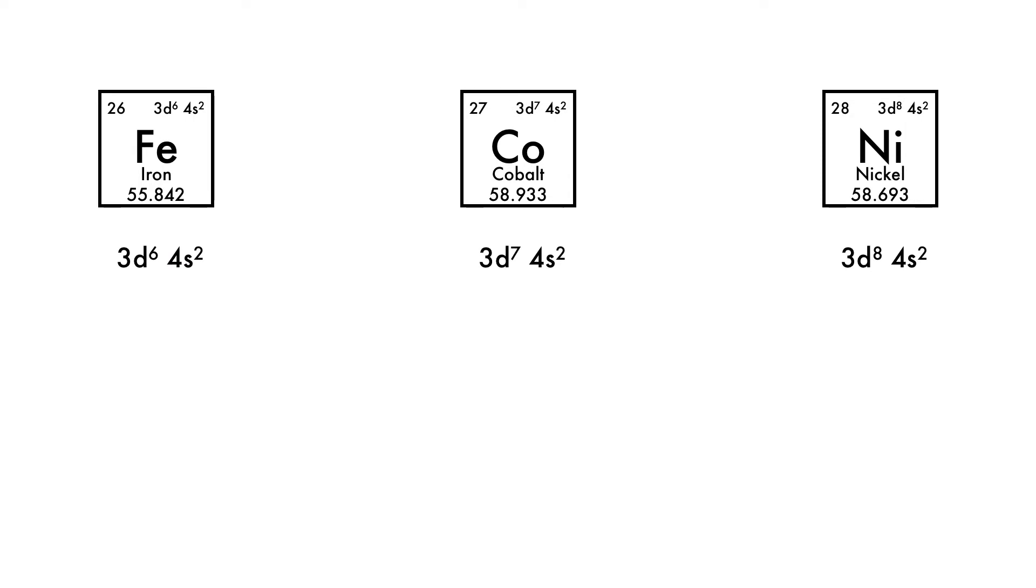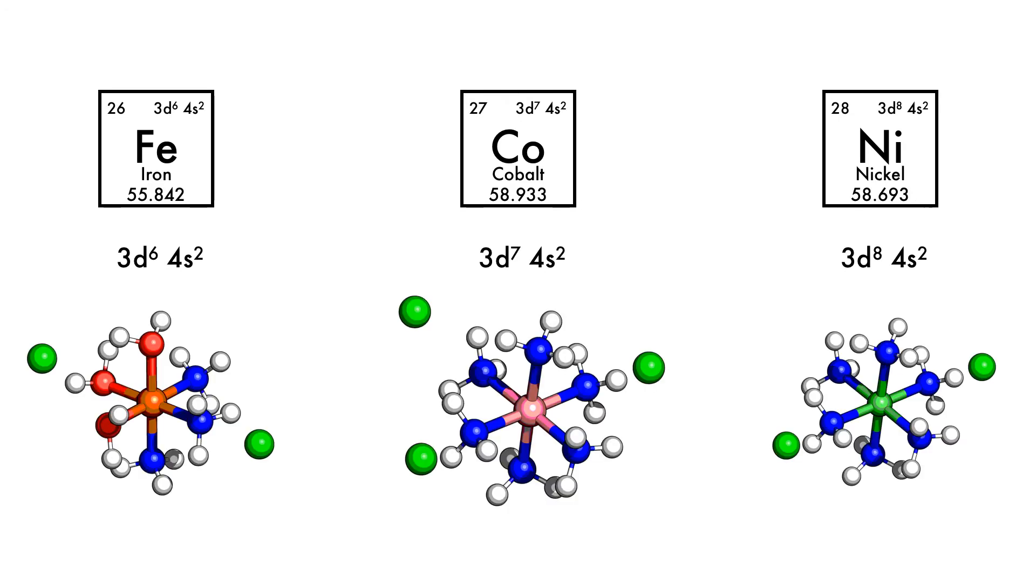While the elemental or gas versions of d-block elements have s-electrons, when they form complexes, their electronic configuration changes.